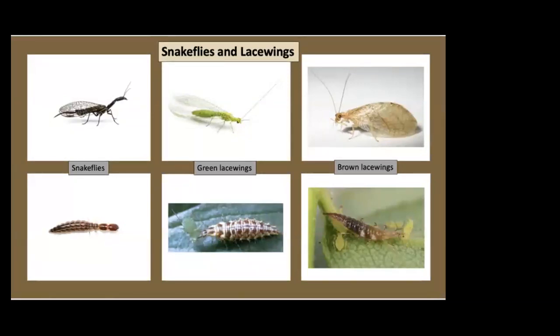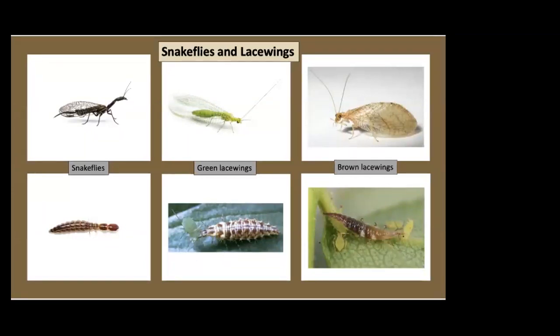Snake flies and lacewings. Photos show the adults on top and the corresponding immature stages on bottom. Both the larvae and adult snake fly are predaceous. Both the larvae and adult of brown lacewings are predaceous. Most adult green lacewings feed on honeydew, nectar, and pollen, whereas the larvae are voracious predators. The brown lacewings tend to appear in cooler weather, while green lacewings prefer warmer weather. You can purchase both green and brown lacewings for biocontrol releases.